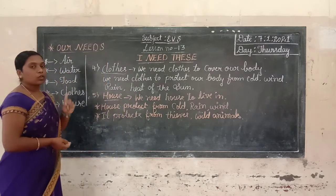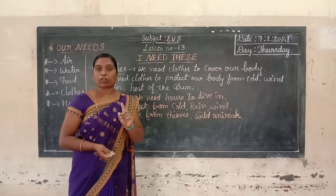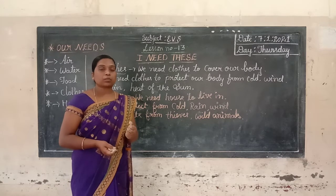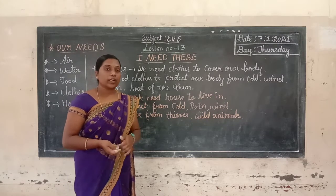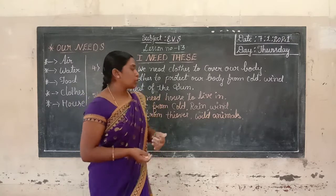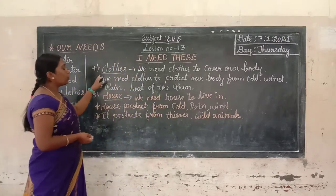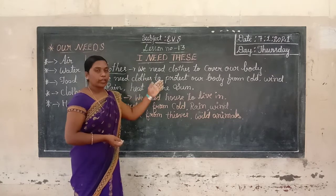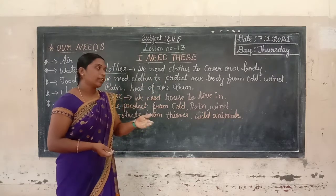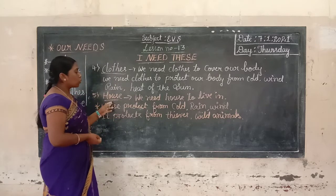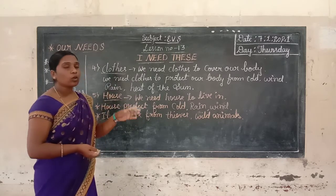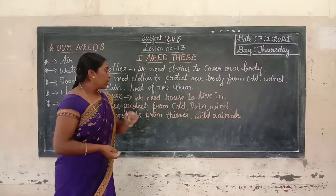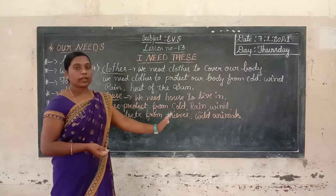Food is also a very important basic need. Without food, we cannot live. Food keeps our body fit and healthy. We need food for growth of our body. Clothes — we need clothes to cover our body and protect it from cold, wind, rain, and heat of the sun. House — we need a house to live in. House protects us from cold, wind, and rain, and from wild animals.